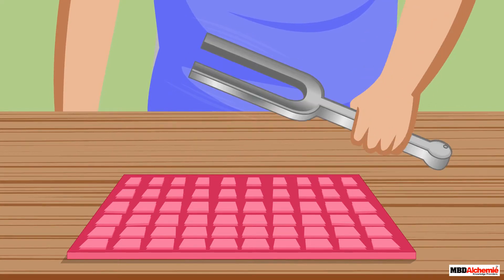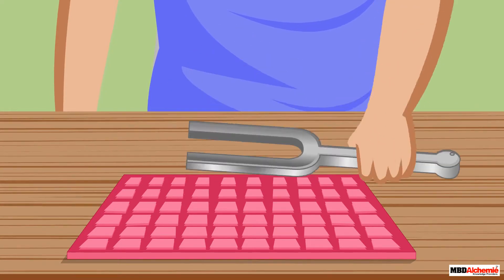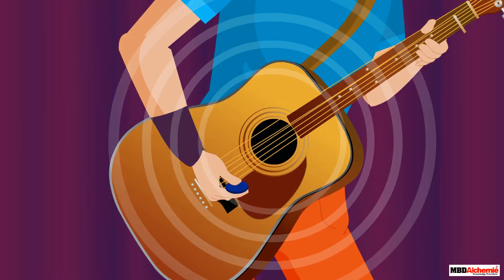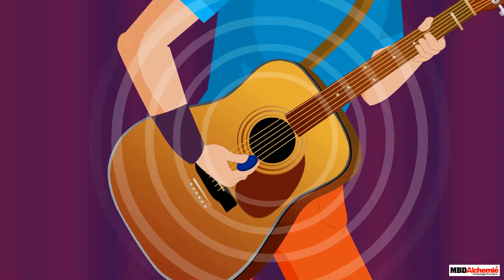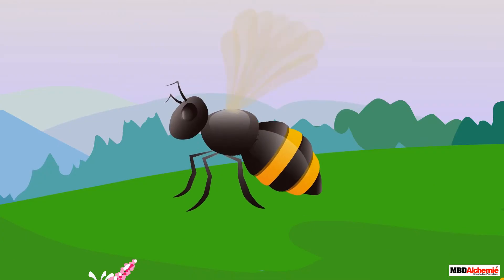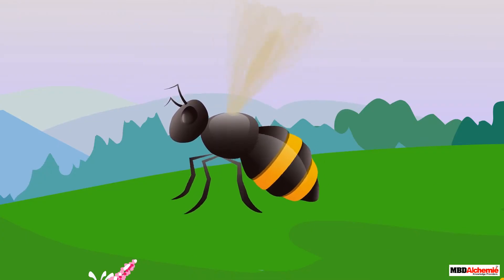Similarly, when we pluck the strings of a guitar, we are actually setting the strings into vibrations and sound is produced. In the same way, when bees flap their wings, the wings actually vibrate, thereby producing a buzzing sound.